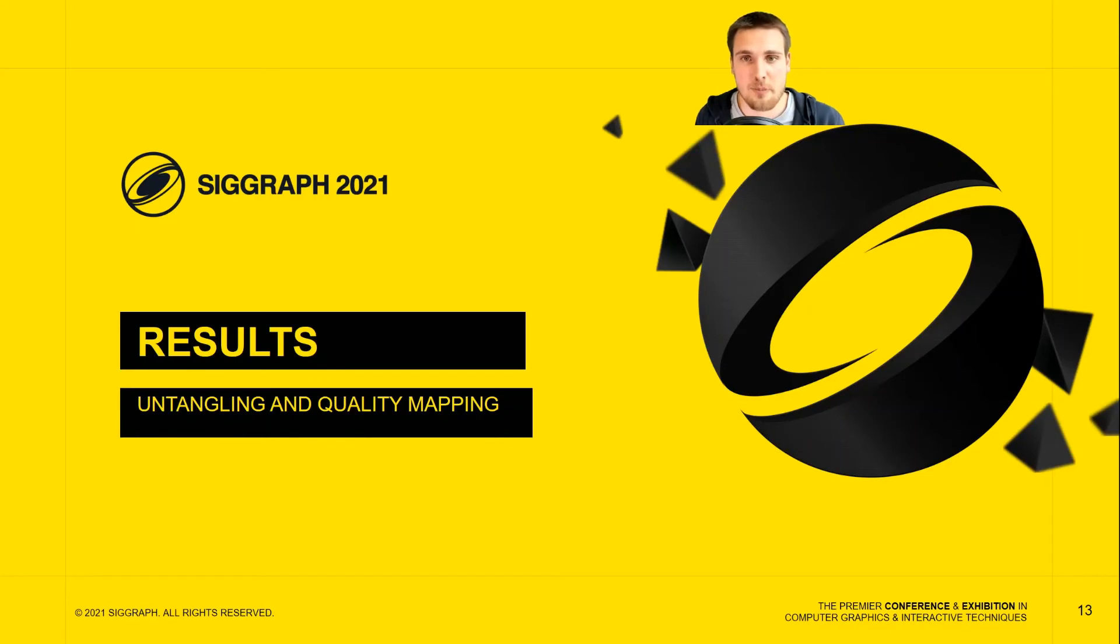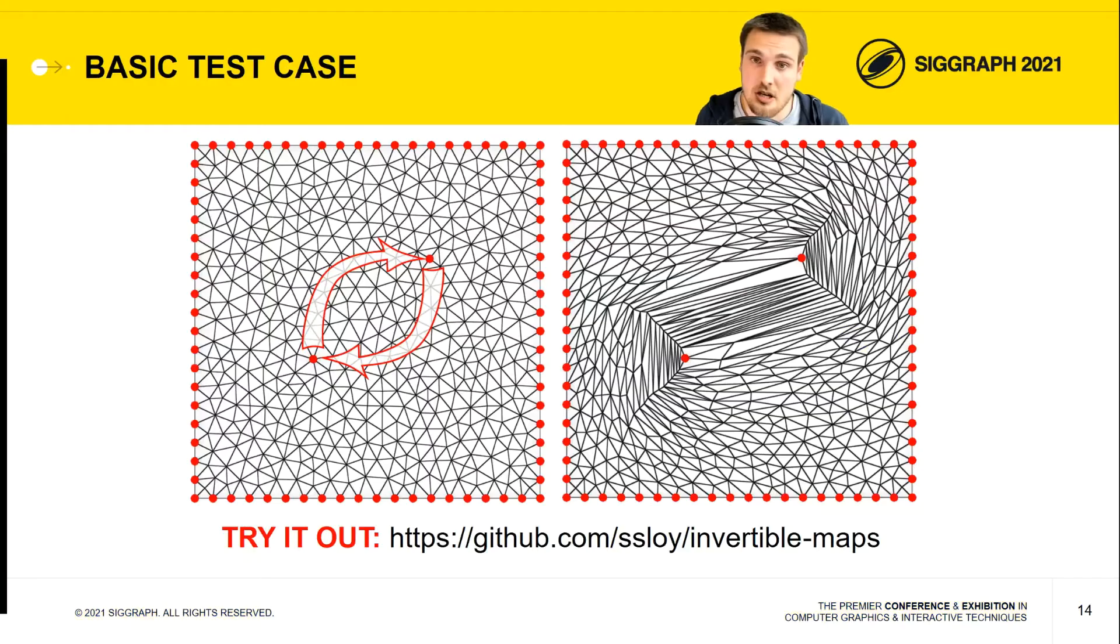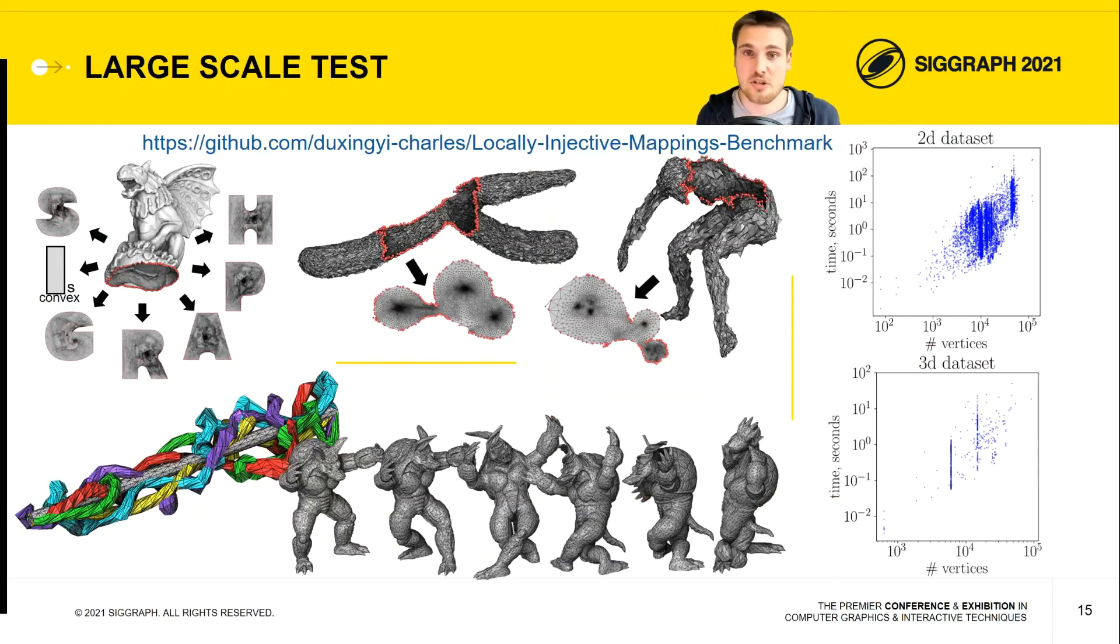In the paper, we propose a lot of ways to test this method. The simplest is to take a mesh and invert two points. Our algorithm is able to untangle this mesh without any trouble. A more challenging case is the use of the database provided by Du et al. It is more than 10,000 meshes, both 2D and 3D, and our code is able to untangle all the challenges without any trouble.